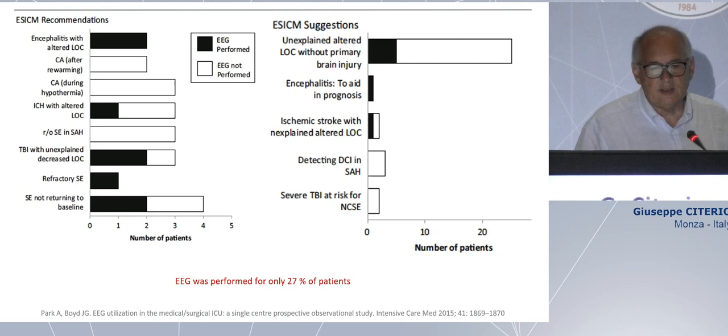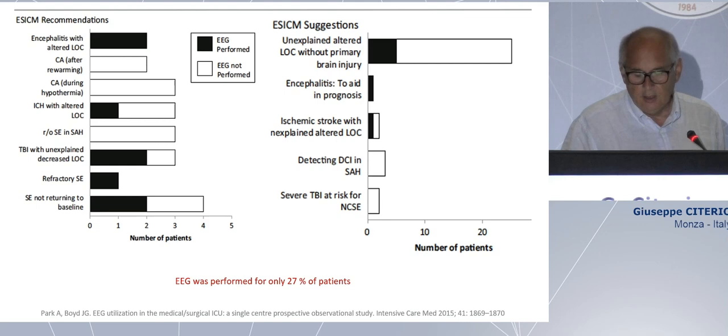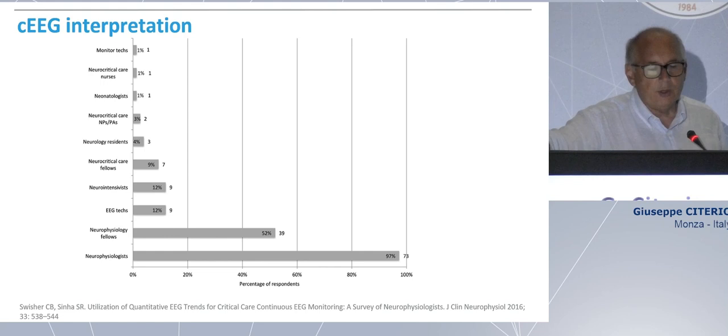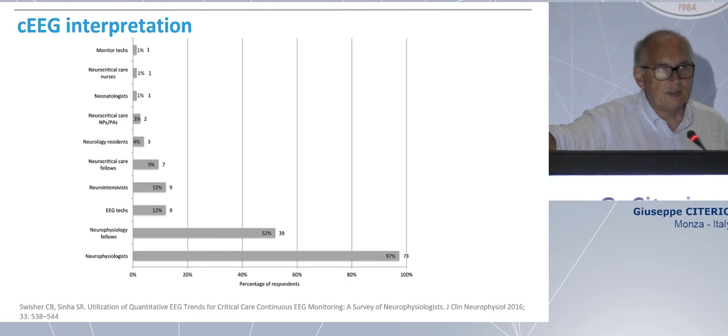We have some rules, we know the problem, we say we need to monitor EEG, but we don't monitor EEG. And the other problem is that for interpreting a raw EEG, we need neurophysiologists because we are not able to do it ourselves. We cannot become neurophysiologists. And so you need to work with other people. We tried to solve this problem in our unit, let's say eight to ten years ago, splitting the problem in different parts.